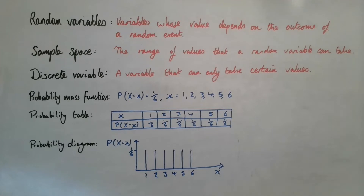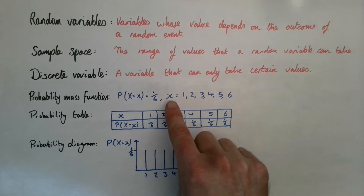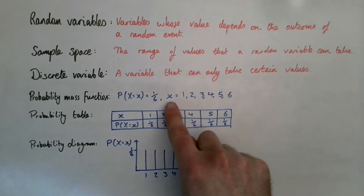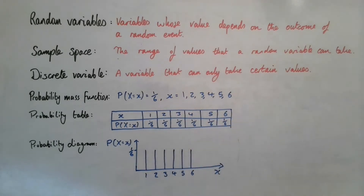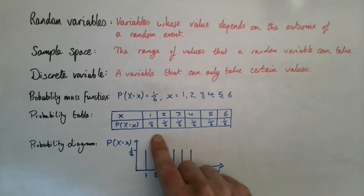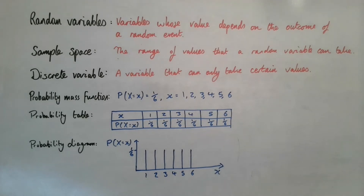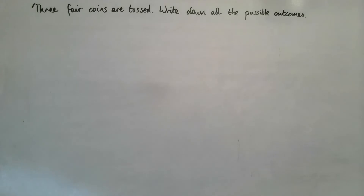A discrete variable can only take certain values. For a dice, the possible outcomes are one through six, each with a probability of one in six. This is called a probability mass function — it masses all outcomes together. In a probability table you list all possible values and the probability of each, which can also be shown as a bar chart or line chart up to one sixth.